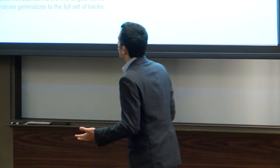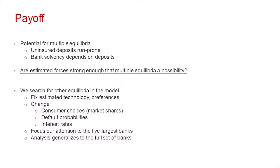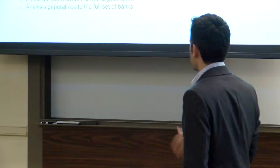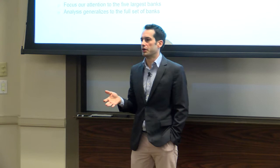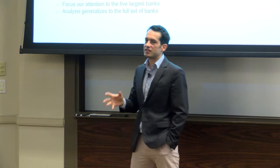Now let's get to why we did all this work. I said uninsured depositors may or may not walk away from banks, but even if we knew it, how could we tell if this causes a bank run? I estimated that the elasticity of deposits with respect to default is minus 0.36. Is that big enough to get multiple equilibria? I'm going to compute counterfactuals: holding technology and consumer preferences constant, but letting consumer beliefs float to pin down equilibrium default probabilities and interest rates. Can we get multiple equilibria for these fundamentals in the full banking system, accounting for competitive spillovers?